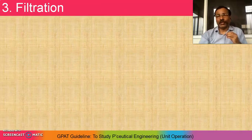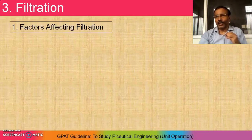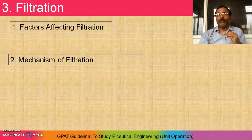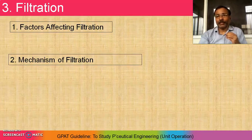Third chapter is filtration. How to study filtration? Factor affecting filtration is the most important thing — check out which factors are affecting filtration. Then, mechanism of filtration — there are different types of mechanisms involved in filtration. Check out the mechanism involved, because the filter media depends upon that principle.